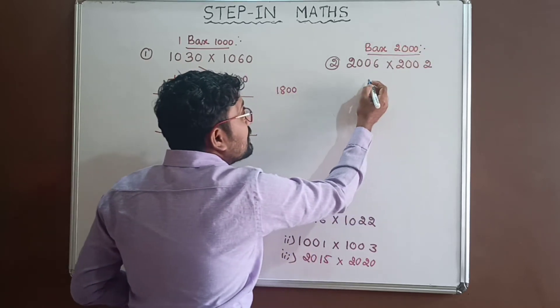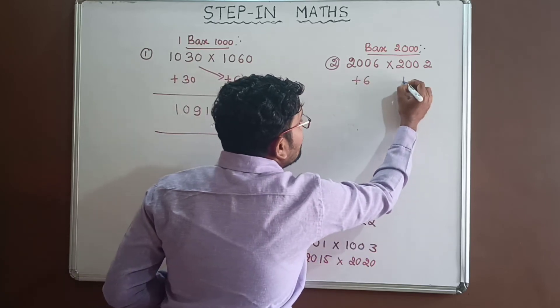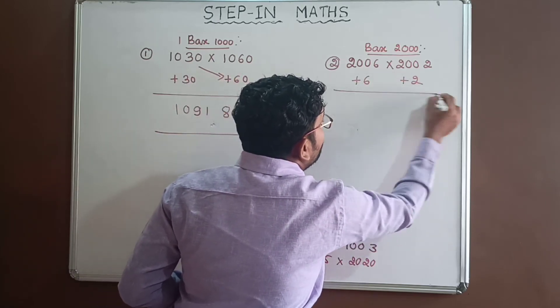2006, this is 6 more than 2000. And this is 2 more than 2000.